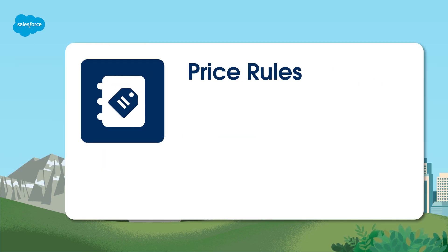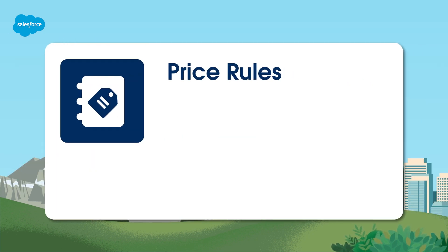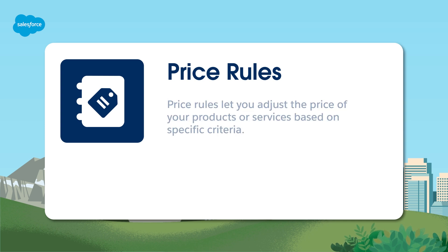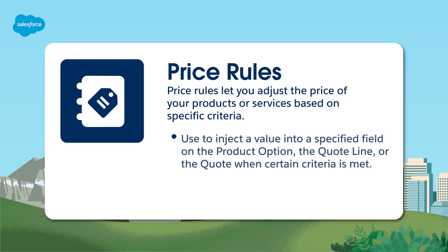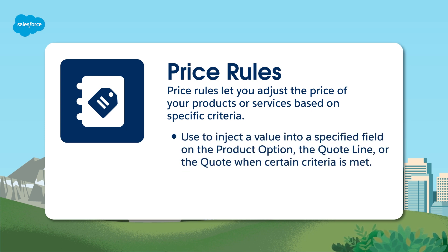That's where price rules come in. Price rules let you adjust the price of your products or services based on specific criteria. A price rule is used to inject a value into a specified field on the product option, the quote line, or the quote when certain criteria is met.